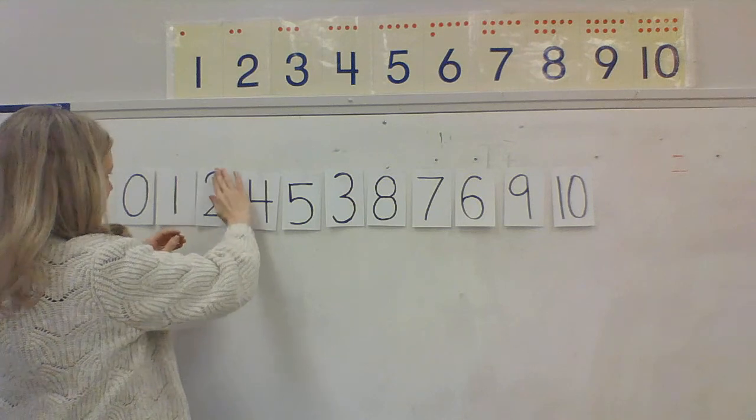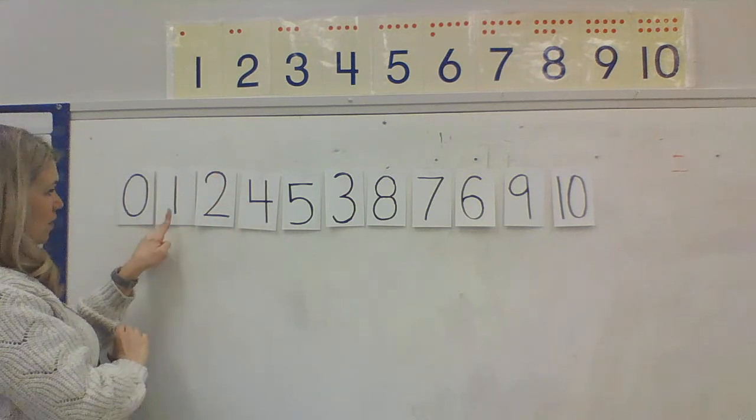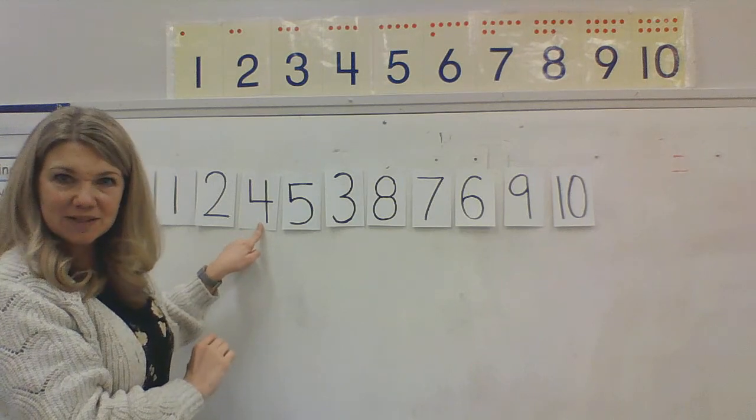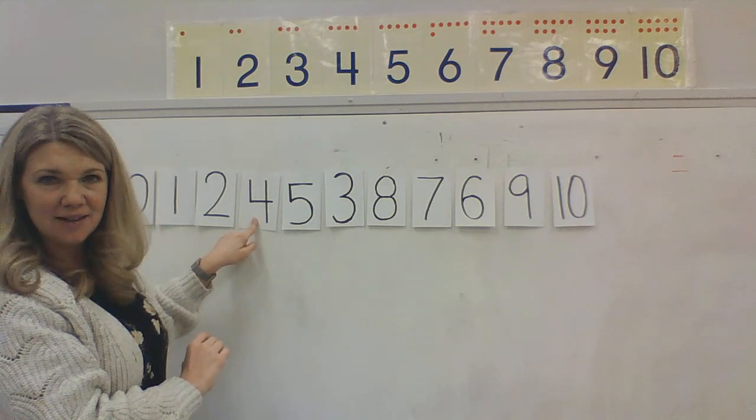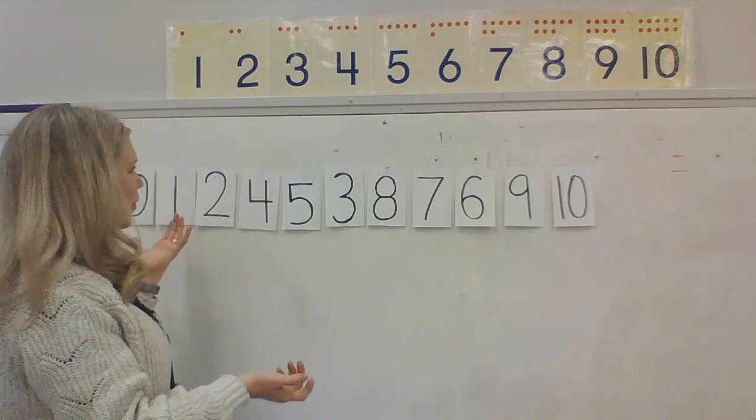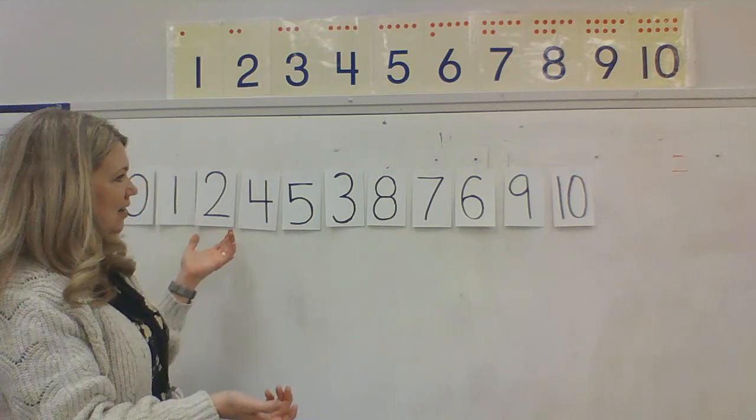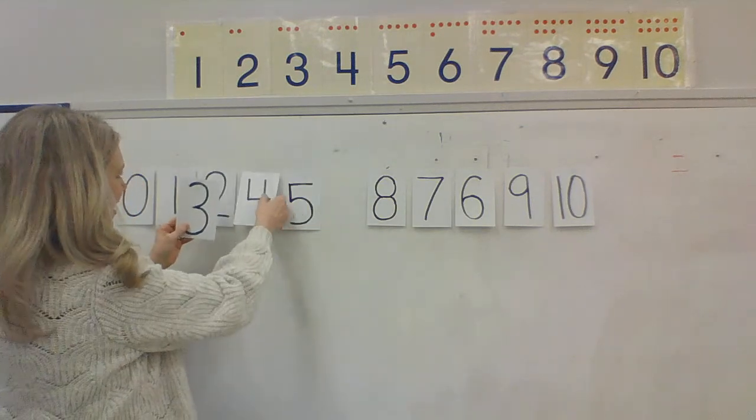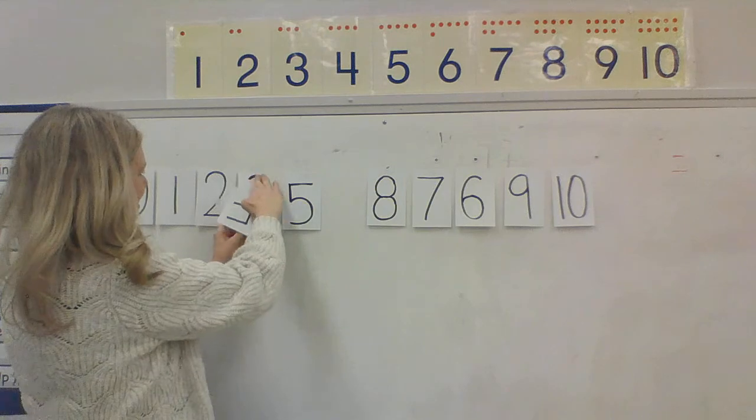Okay, let's do our numbers. 0, 1, 2, 3 is supposed to be here. Is that the number 3? No, that's the number 4 in the wrong place again. Where's my number 3? There it is. There's my number 3. So let's move our number 3 where it needs to be.